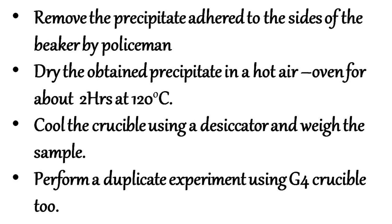Any precipitate adhered to the sides of the beaker should be removed using a policeman. Dry the obtained precipitate in a hot air oven for about 2 hours at 120 degrees centigrade. Cool the crucible using a desiccator and weigh the sample. Repeat the process of drying and weighing till a constant weight is obtained.